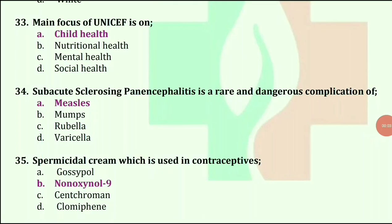Subacute sclerosing panencephalitis is a rare and dangerous complication of — options are measles, mumps, rubella, and varicella. The answer is measles.